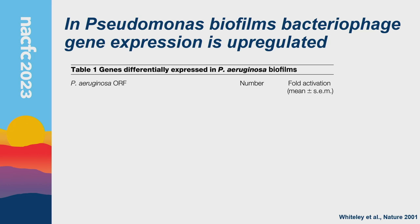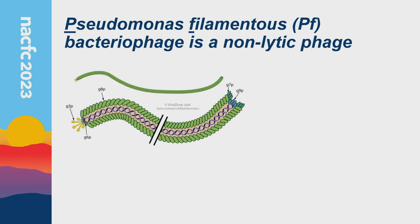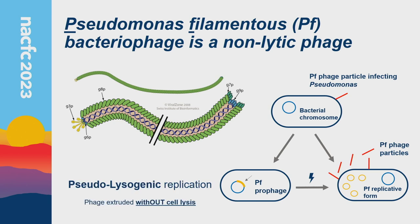In Pseudomonas biofilms, bacteriophage gene expression is quite upregulated. In Pseudomonas grown in a biofilm versus planktonically, the top nine upregulated genes come from the PF bacteriophage, with the most upregulated being the coat protein of PF phage, activated 83-fold. PF stands for pseudomonas filamentous bacteriophage — it's a non-lytic phage, a long skinny string of a virus with a protein coat and a single-stranded DNA genome folded back on itself. The cap recognizes type 4 pilus on Pseudomonas and injects the DNA, which incorporates into the bacterial chromosome as a prophage.